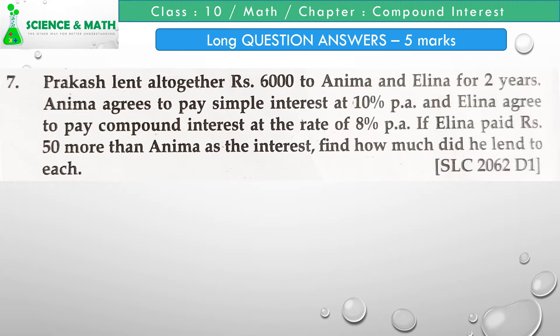Question number seven: Prakash lent altogether rupees 6000 to Anima and Elena for two years. Anima agrees to pay simple interest at 10% per annum and Elena agreed to pay compound interest at the rate of 8% per annum. If Elena paid rupees 50 more than Anima as interest, find how much was lent to each. This question was asked in SLC 2062.